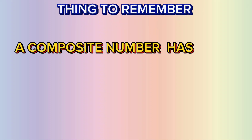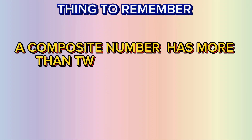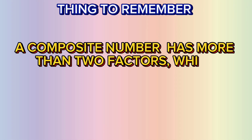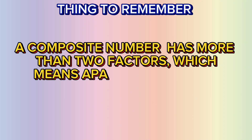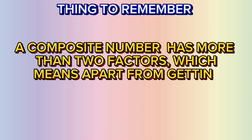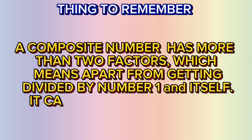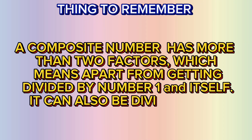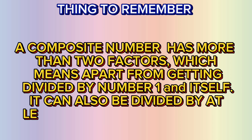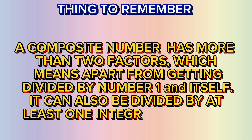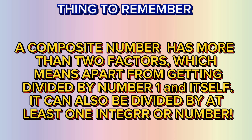Things to remember: a composite number has more than two factors, which means apart from getting divided by number 1 and itself, it can also be divided by at least one other integer or number.